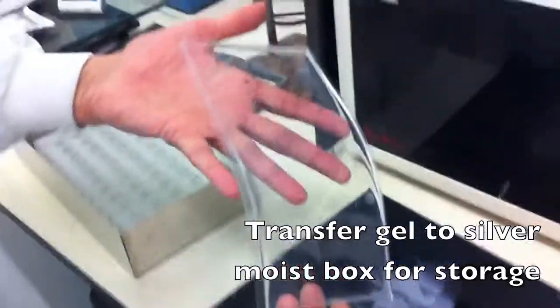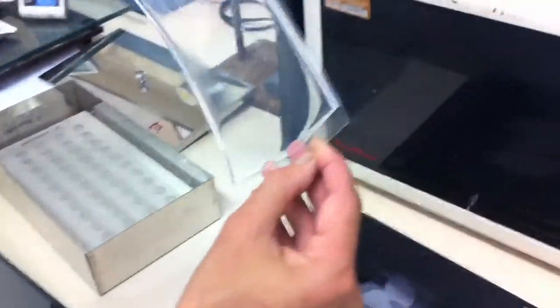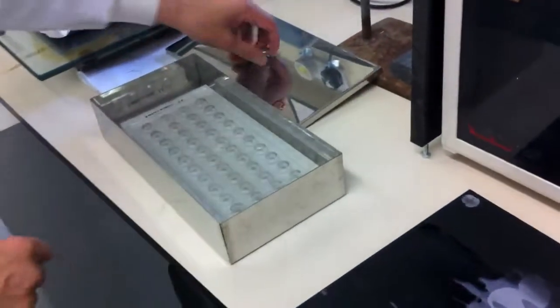Transfer the gel bond film and the gel to a silver moist box for storage. Place in the fridge for at least 30 minutes before using the gel, ideally overnight.